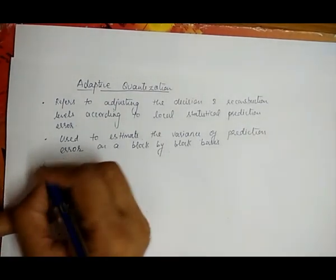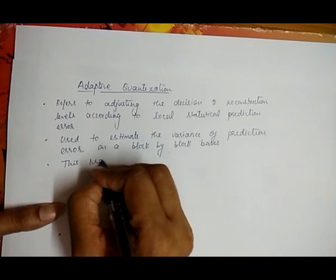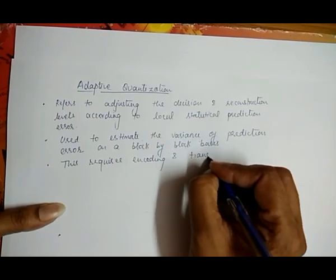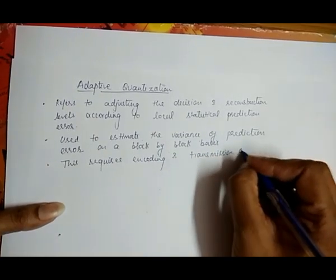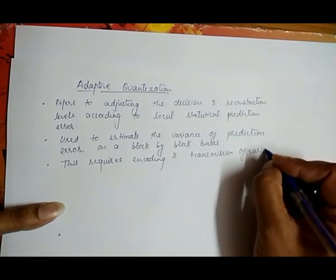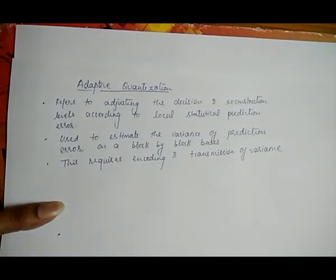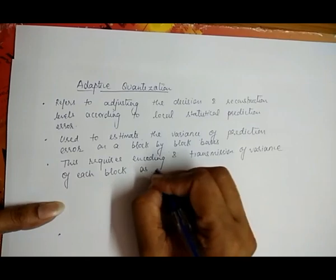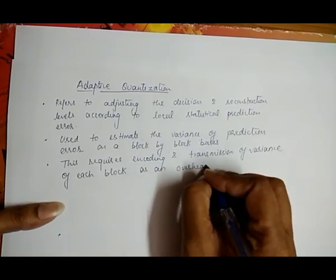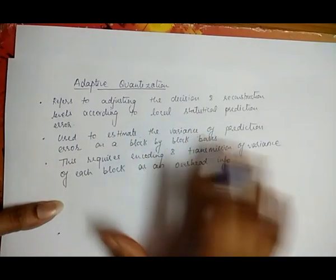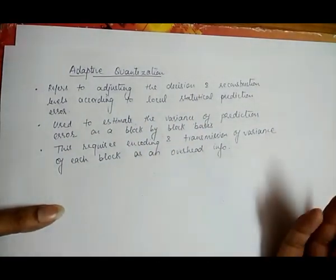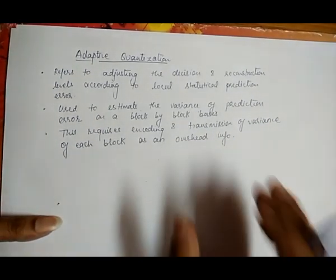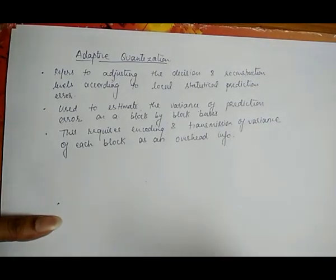Hence, the block-by-block adaptation of the quantizer is used. However, this adaptive quantization requires encoding and transmission of the variance of the prediction error. This requires encoding and transmission of the variance of each block as overhead information, which is transmitted to the receiver end.